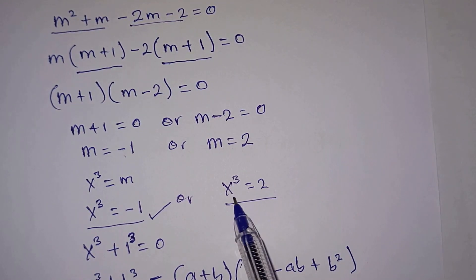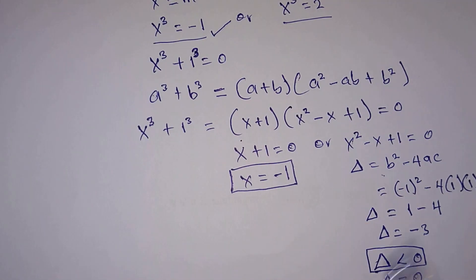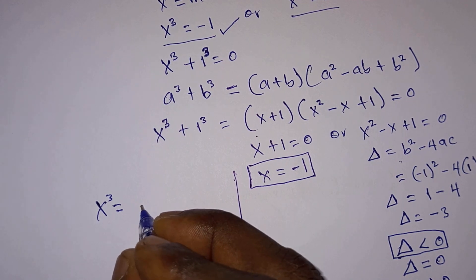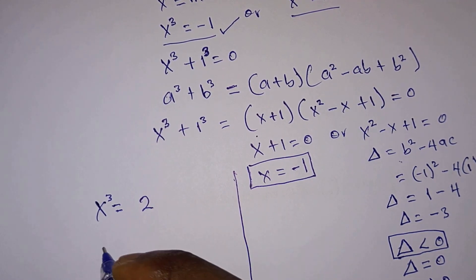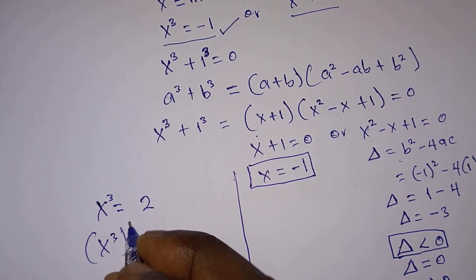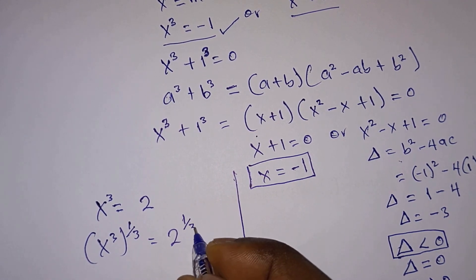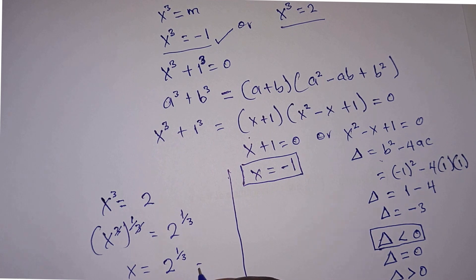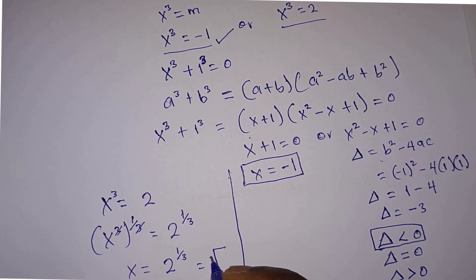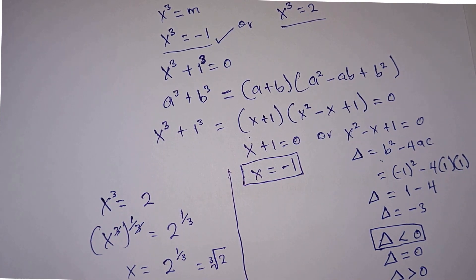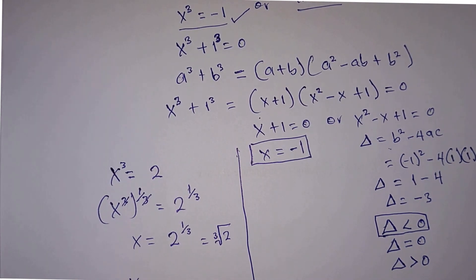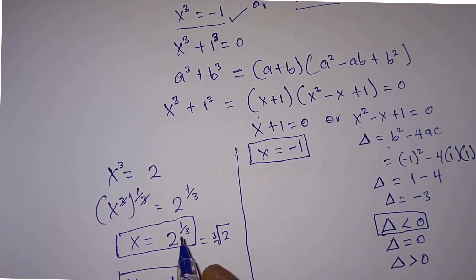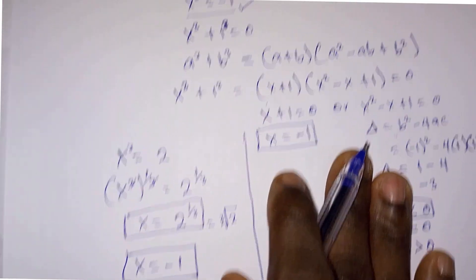Now let's consider the equation x cubed equals 2. We raise each side to the power 1 over 3, so x equals 2 to the power 1 over 3, which is the same as the cube root of 2. In all, we found x equals negative 1 or x equals 2 to the power 1 over 3. Let's go ahead and test our answers to see whether they satisfy the original equation.